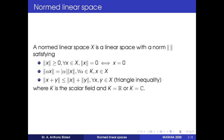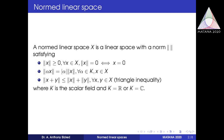Let X be a normed linear space with norm satisfying the following conditions: norm of x greater than or equal to 0; norm of x equal to 0 if and only if x equal to 0; norm of alpha x equal to modulus of alpha times norm of x, for all alpha belonging to k and x in X, where k is a scalar field — either the set of all real numbers or the set of all complex numbers. The third condition is the triangle inequality: norm of x plus y less than or equal to norm x plus norm y, for all x, y belonging to X. This is the definition of a normed linear space.